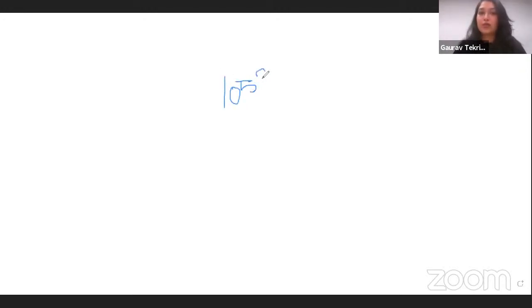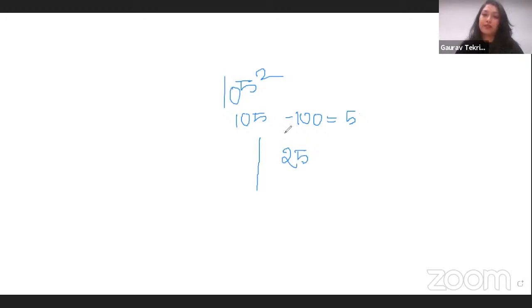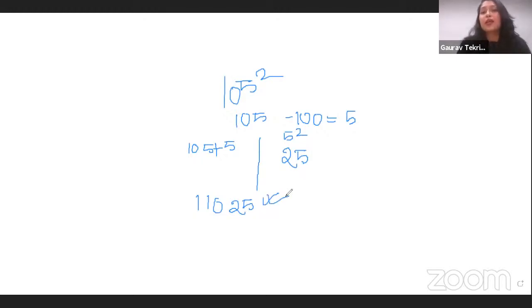Let's go more than 100 this time — 105 squared. So 105 minus 100 equals 5. We make the division: here we write 25 because the difference is 5, so 5 squared is 25. And here we do 105 plus 5 which is 110. So 105 squared is 11025. That's how fast you can get the answers for squaring using Vedic Maths.